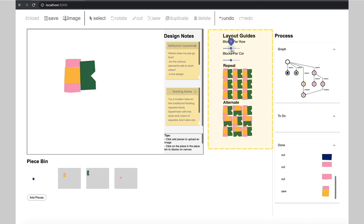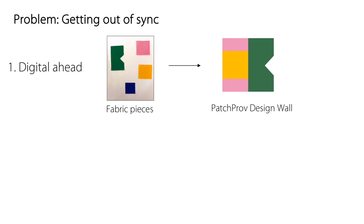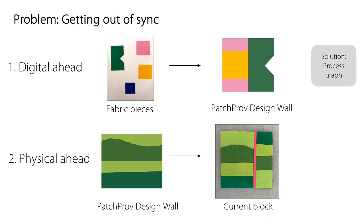They can see how their design looks repeated by adjusting the rows and columns in the layout guides. As you may have noticed, the user is taking steps in both the digital and physical environments, and this can cause the two representations to become out of sync. The user may update the digital representation without cutting or sewing any real fabric. To keep track of these digital changes, we use what we call a process graph — for more information on our approach, please see our paper. In cases where the user gets out of sync in the physical world, they can just load the new pieces into the system to replace any pieces that are out of date.